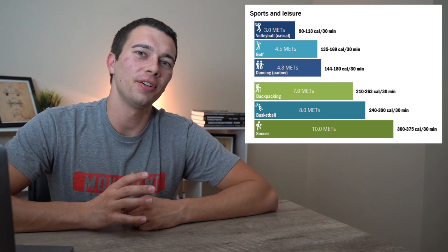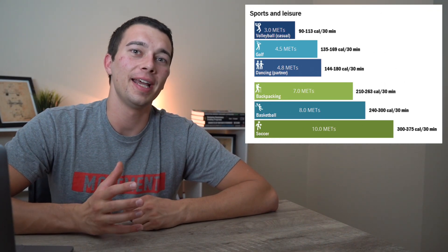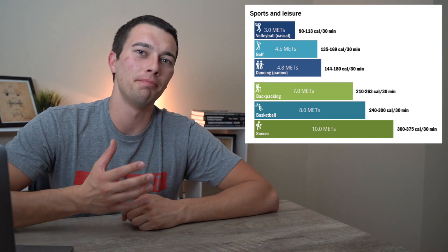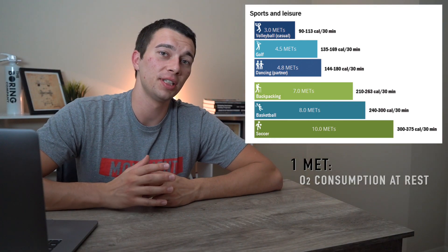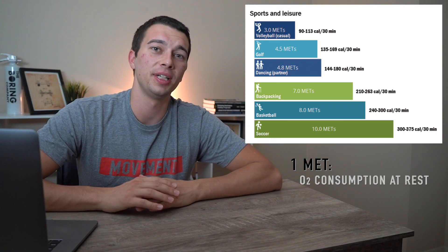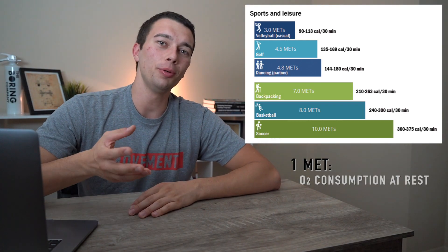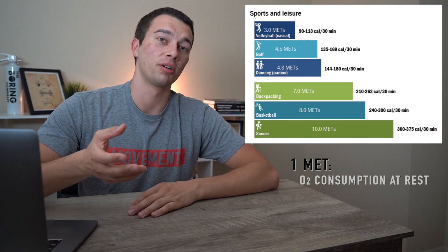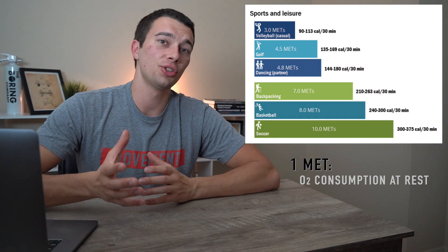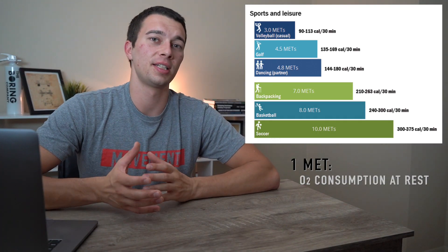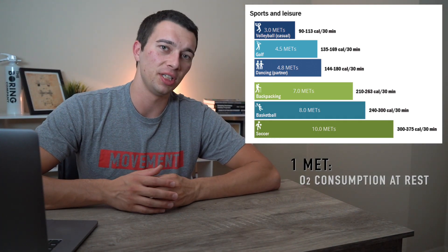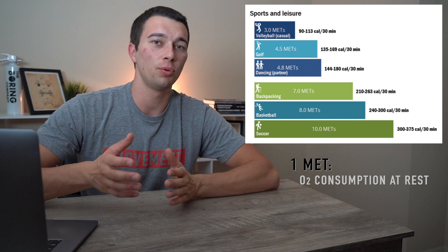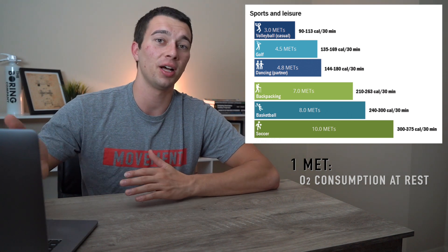To start off, you may have seen a chart like this that shows different activities and the associated MET value. One MET would be our oxygen consumption just at rest, doing nothing at all. Two METs would double our resting oxygen consumption. Leisurely activities are typically around two or three METs, and sporting activities get us to three, four, five, six-plus METs.